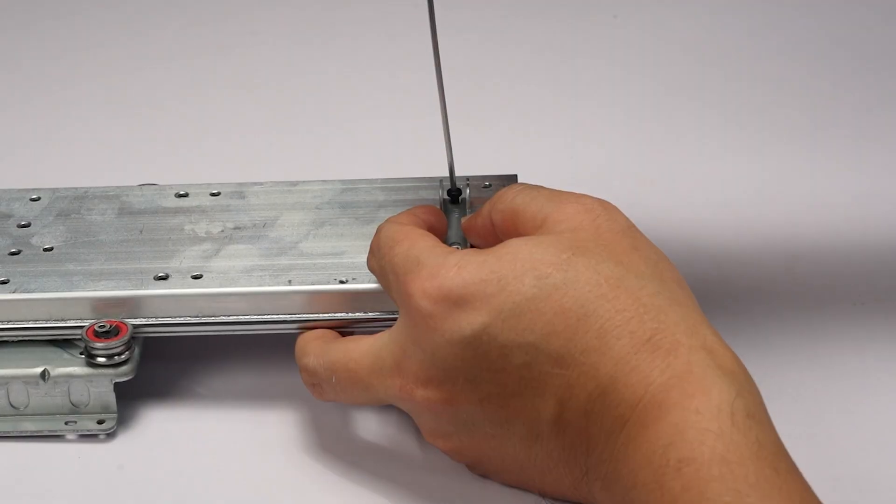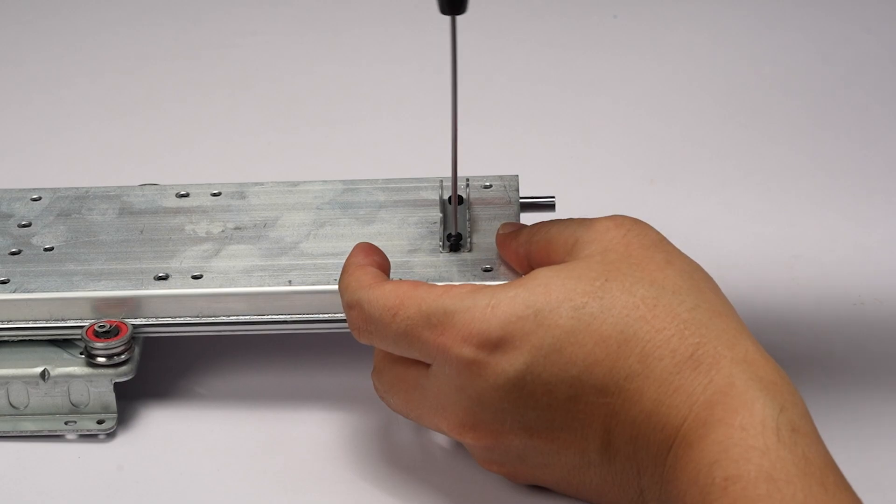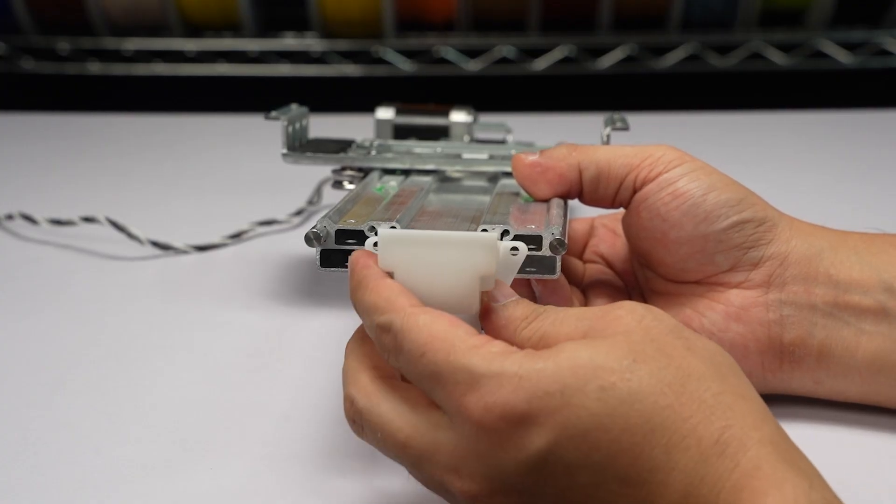Install the torsion spring holder. You need to check the direction of the hook. Install the Y tensioner and lock in four screws.